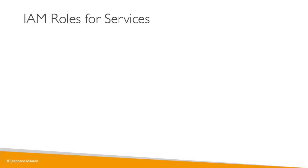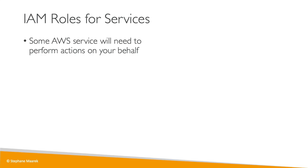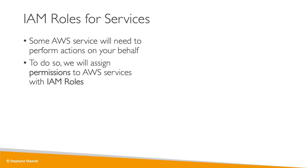We have to talk about the last component of IAM, which is called IAM roles. Some AWS services that we'll be launching throughout this course will need to perform actions on our behalf on our accounts. For this, just like users, they will need some kind of permissions. So we need to assign permissions to AWS services, and to do so we're going to create what's called an IAM role. These IAM roles will be just like a user, but they are intended to be used not by physical people but instead by AWS services.